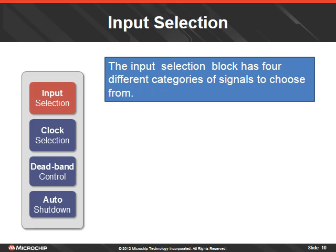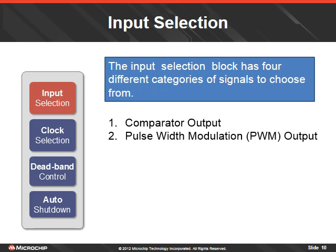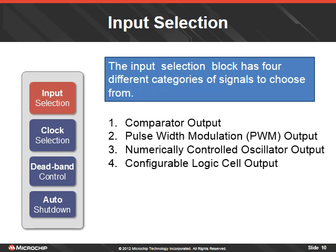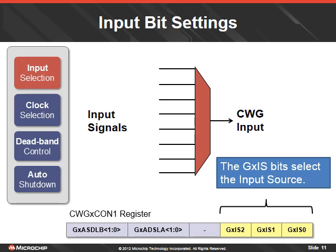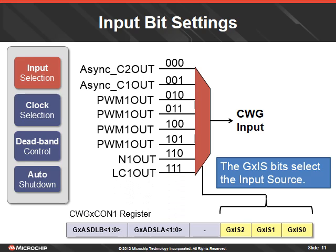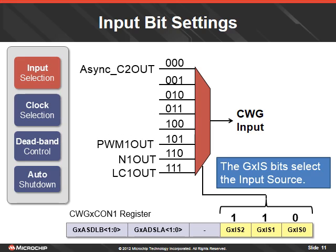The input selection block has four different categories of signals to choose from: output from a comparator, output from a pulse width modulation peripheral, output from the numerically controlled oscillator, and output from the configurable logic cell. Any one of these peripheral outputs can be selected to become the input to the complementary waveform generator. The CWG input source select bits of the CWG control register number 1 select the input source. Three bits determine the input source, with each option having a corresponding 3-bit reference number. In this example, the NCO output is selected.